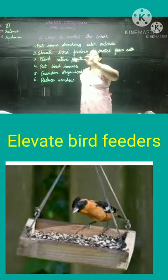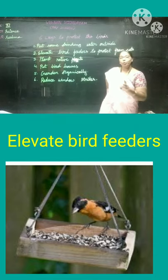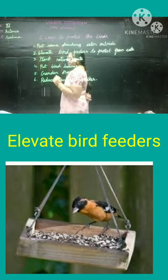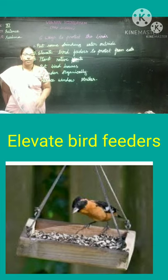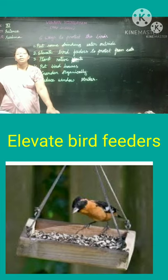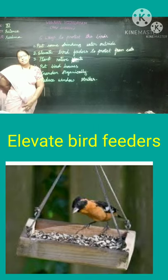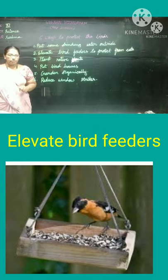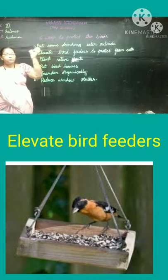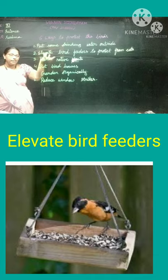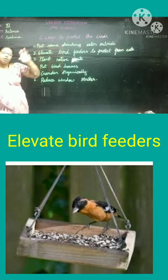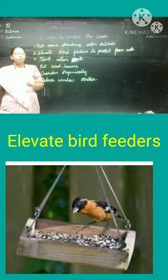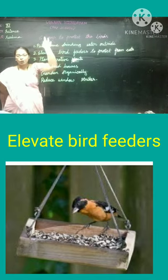The second way is to elevate bird feeders to protect birds from cats. Some people feed birds by keeping grains for them. But we should not keep the grains on the ground, because when a bird is eating, a cat or dog may come and hunt the bird. We should hang the food in a bowl at a height so that cats and dogs cannot reach it.